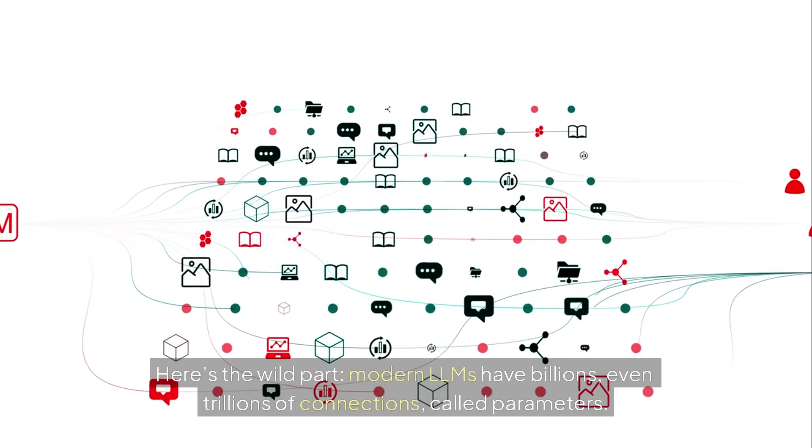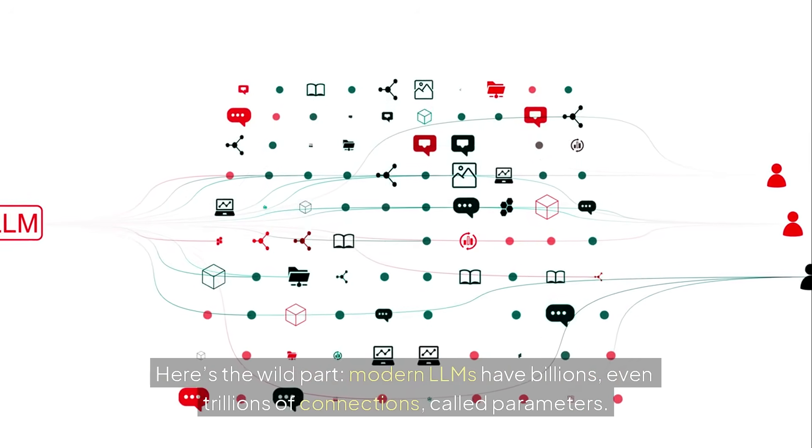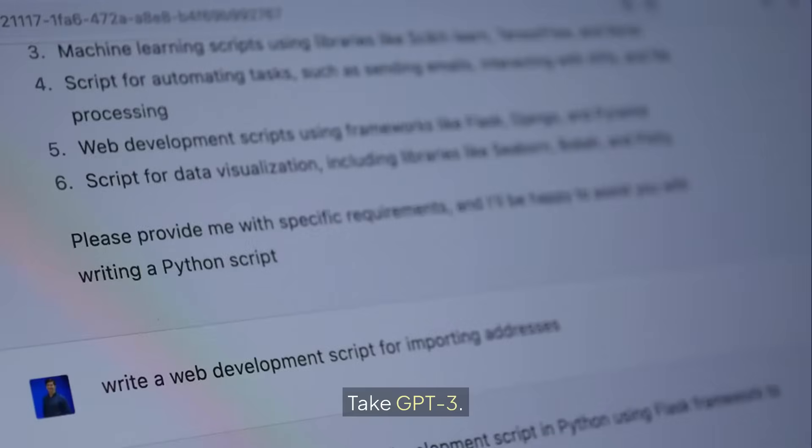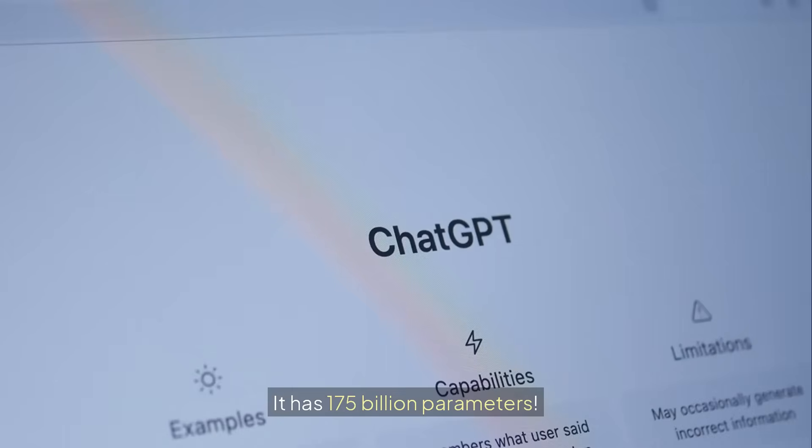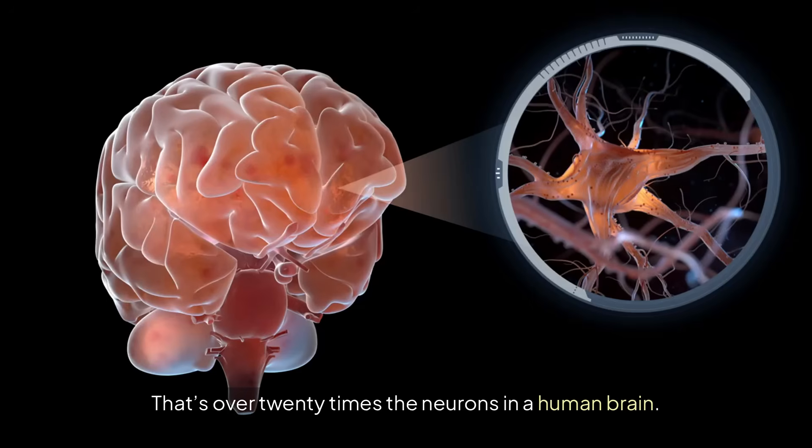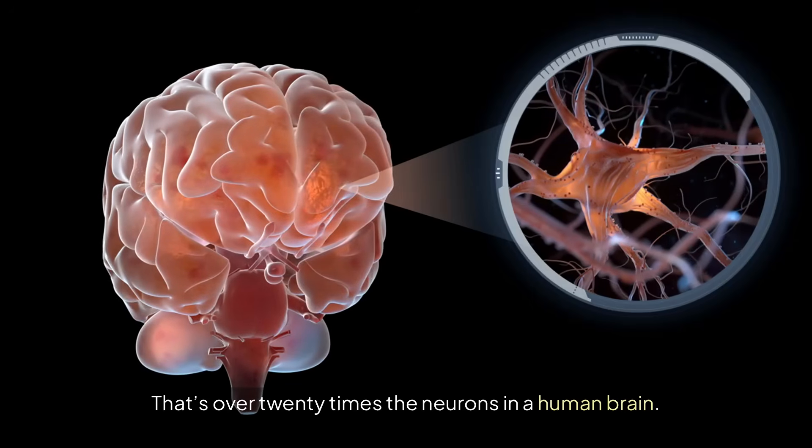Modern LLMs have billions, even trillions of connections, called parameters. That's over 20 times the neurons in the human brain.